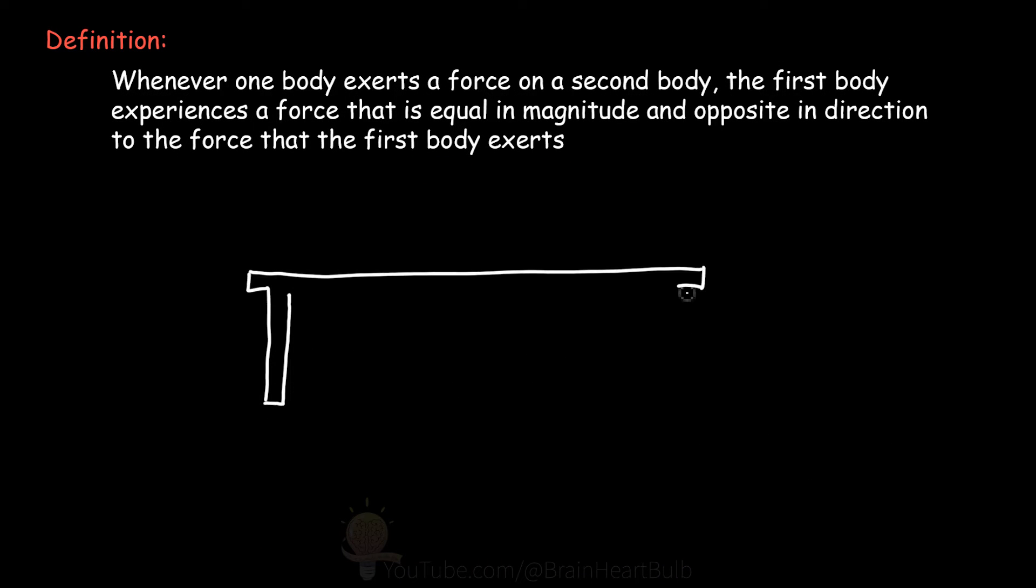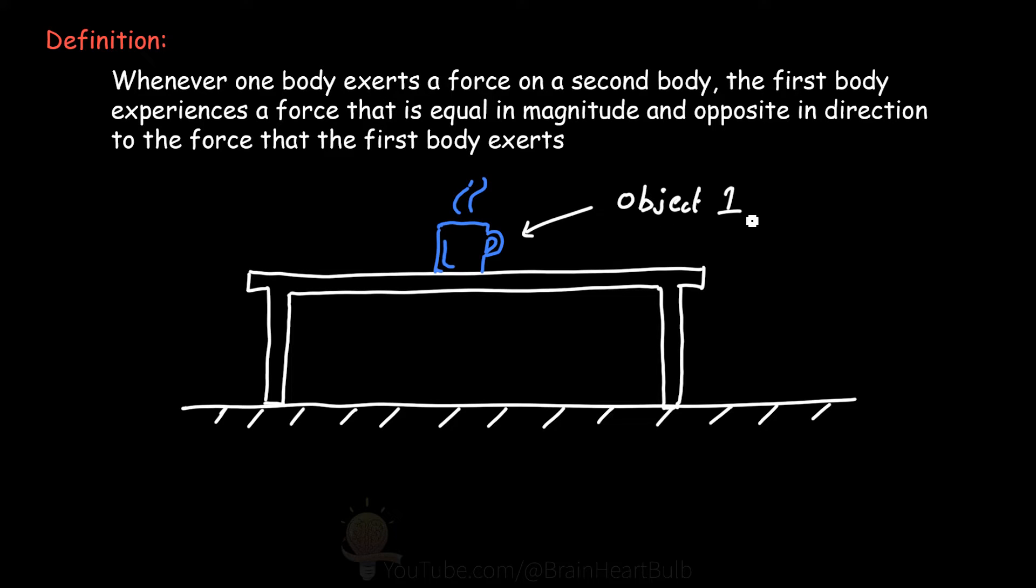Let's look at another example of Newton's third law. We have a coffee mug that rests on a table. One of our objects of interest is the coffee mug, the other is the table. The coffee mug and the table is our system of interest. How can we describe this system using Newton's third law?